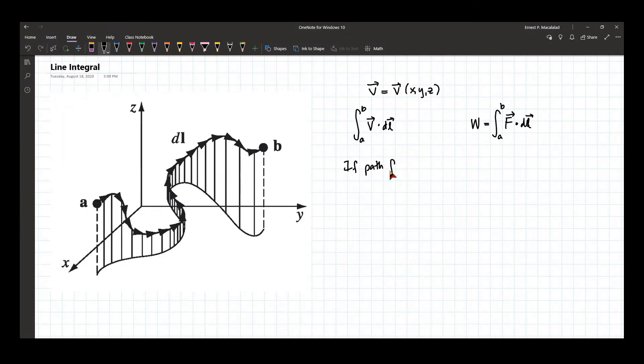Now if the path forms a closed loop, that means a is equal to b. So instead of writing the integral from a to b where b equals a, we just rewrite this as having a circle at the middle of the integral sign.